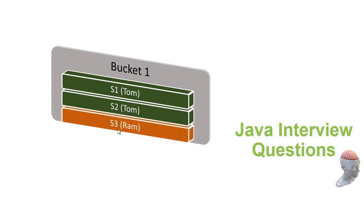Contract number two: S2 and S3 are two different strings — they have an equal hashCode, but they are actually not equal strings. That is contract number two: when the hashCode is equal, that doesn't mean the strings need to be equal. So contract one says two strings are equal means hashCode must be equal; contract two says equal hashCodes doesn't mean equal strings.